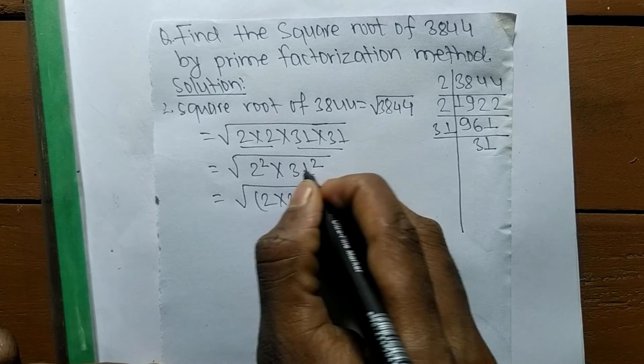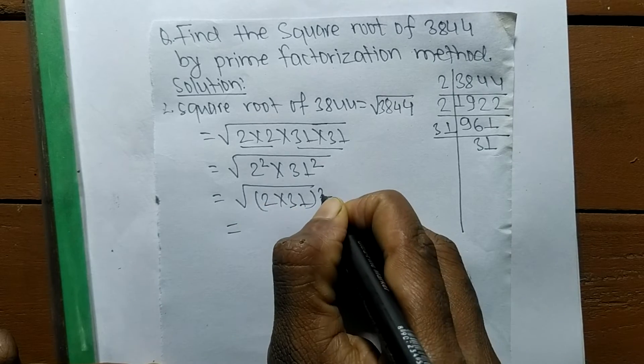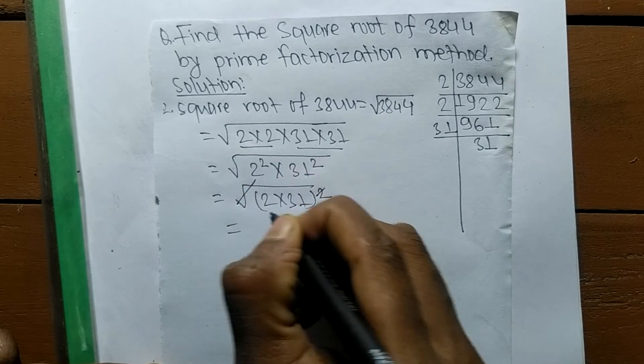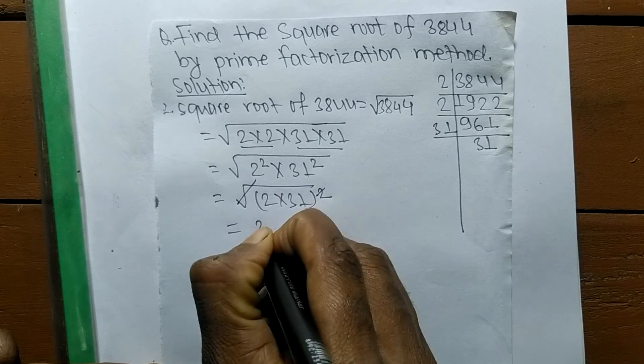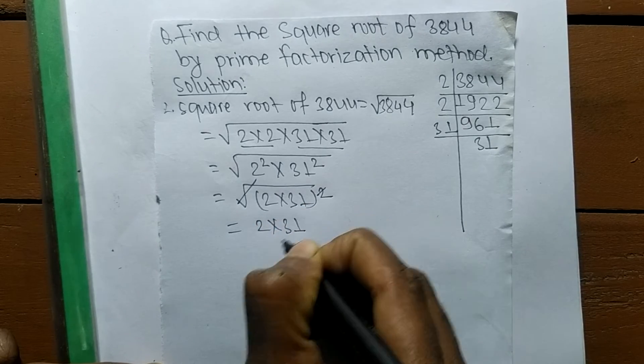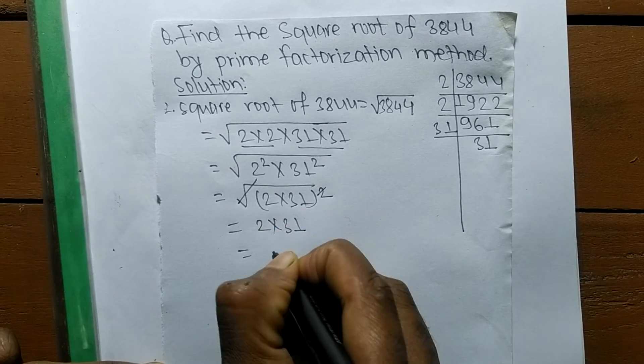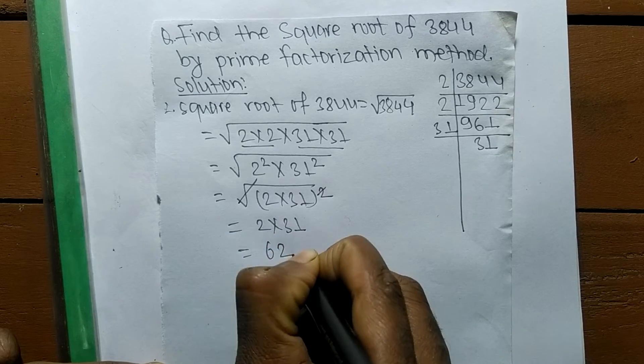Here the square and square root cancel each other, so the remaining part is 2 times 31. 2 times 31 means it is 62.